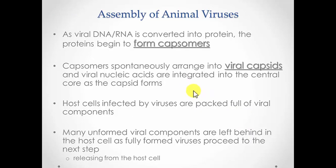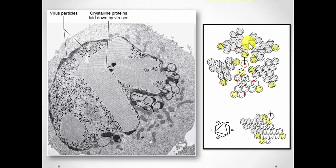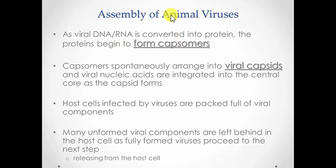The next stage is assembly. Assembly essentially involves the formation of the capsid, which involves individual capsomers — the building blocks of the capsid from Chapter 6 Part 1. The capsomers will literally spontaneously form to create a capsid. Here's a figure showing individual capsomers of an icosahedral virus and how they form into a top-down view of an icosahedral capsid. Their geometry literally allows them to spontaneously assemble.